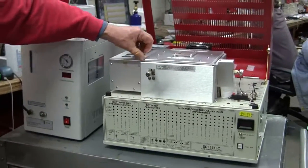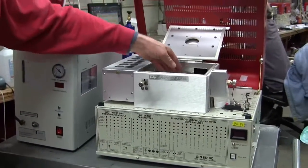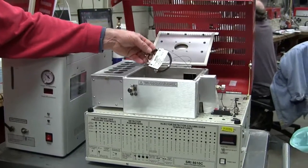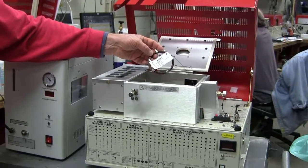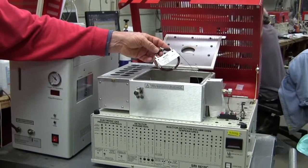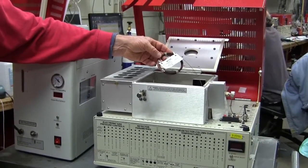The Model 8610 can come in several different versions. One version has one column at a time. This particular column is the column that would be used for separating the CBD, the THC, the CBN, and all the other cannabinoids.